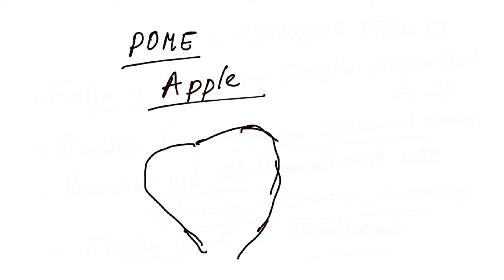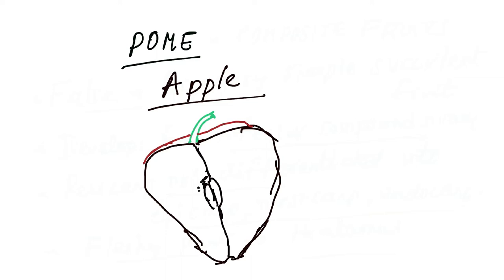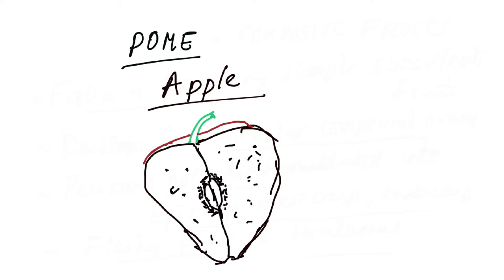A very famous example of the pome category is the apple. Looking at the cut section of an apple, we can clearly see distinct divisions. Starting from the outside, the first layer is the skin, which is the periderm. A considerable part of the fruit — the edible part — is the fleshy thalamus. The pericarp, as already mentioned, is not differentiated into three parts and is found inside the fruit rather than being visible outside.